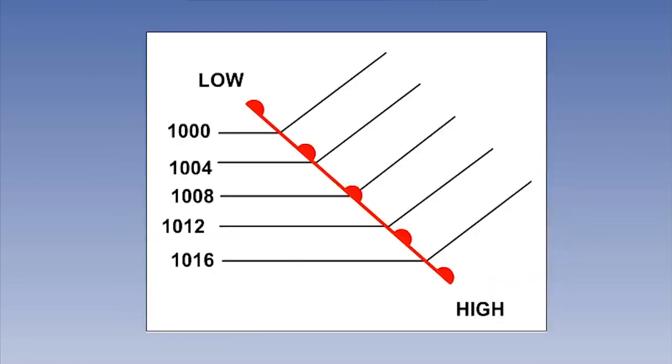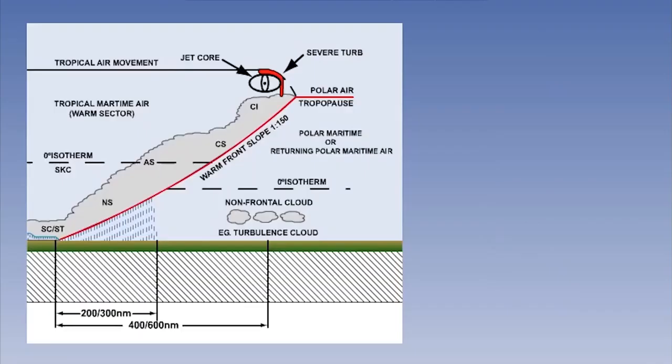The warm front. If warm air is replacing cold air, then we call it a warm front. The slope of a typical warm front is 1 in 150. Here's a side view, showing the main areas of cloud associated with such a front. This is the sequence of cloud that an observer on the ground would see if the front was approaching.